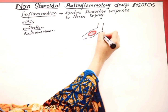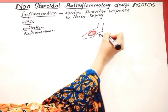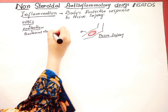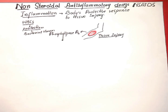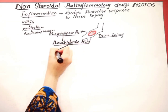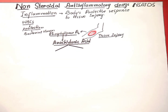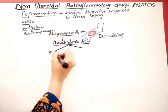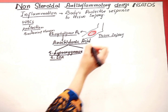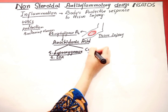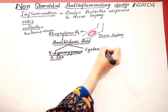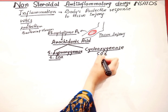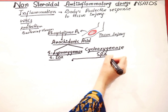When we get some tissue injury, phospholipase A2 enzyme is released, which then converts into arachidonic acid. This arachidonic acid is a substrate for two major enzymes: 5-lipoxygenase, which is 5-LOX, and cyclooxygenase, or COX enzymes.